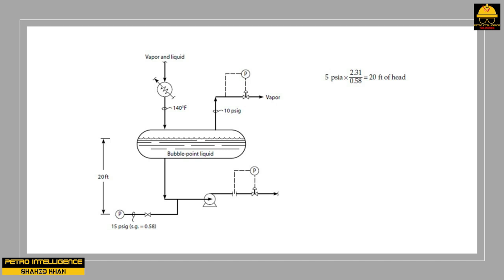The vapor pressure of the liquid also increases by 5 psi. This must happen because the liquid in the drum, which is in equilibrium with the vapor, is at its bubble point pressure. Since the available NPSH equals physical pressure at the suction minus vapor pressure of the liquid, if both pressures increase by 5 psi, the net gain in NPSH is zero.